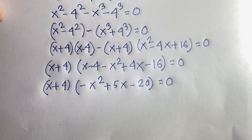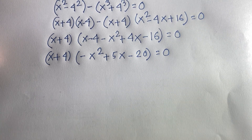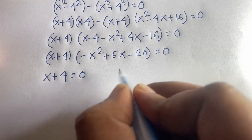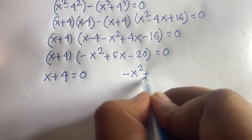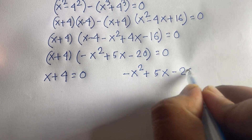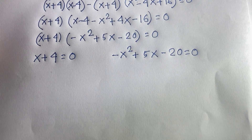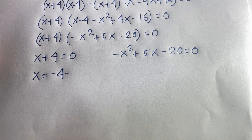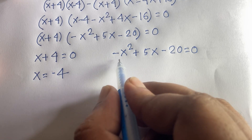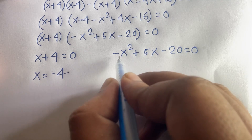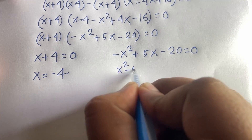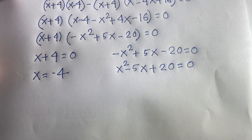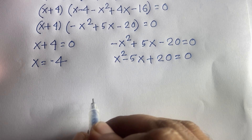We now have two cases. Case one: x plus 4 equals zero, giving x equals minus 4. Case two: the remaining factor is negative x squared plus 5x minus 20 equals zero. Multiplying both sides by minus 1 gives x squared minus 5x plus 20 equals zero, which is a quadratic equation.